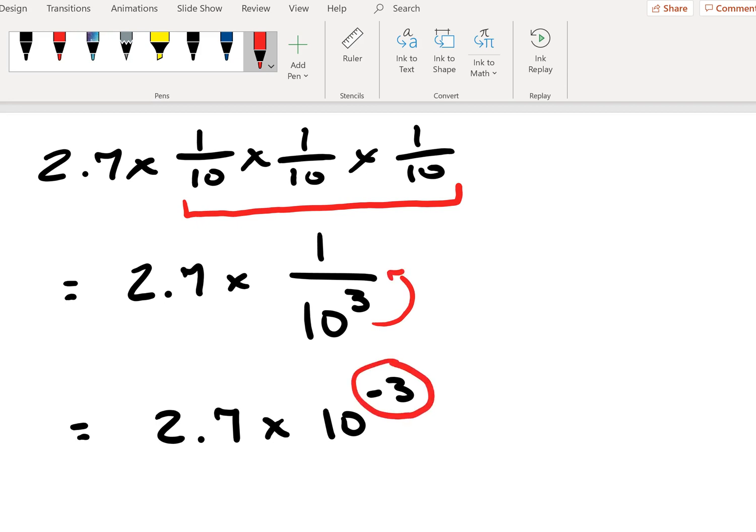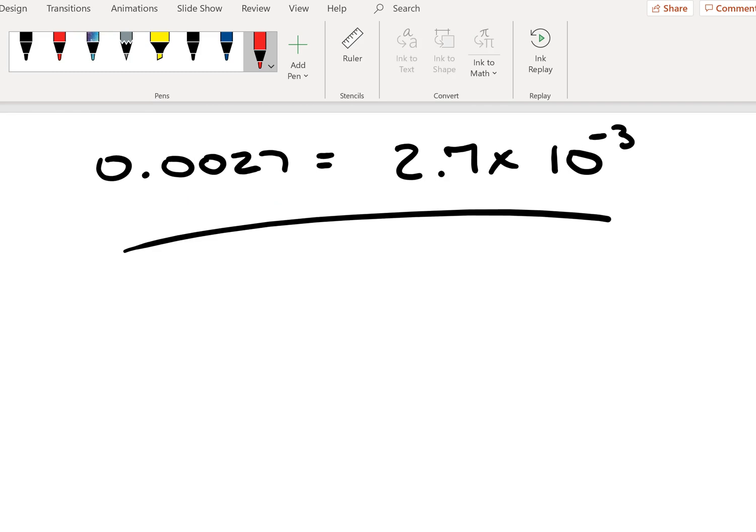And so indeed, we do see that our original expression whereby we said 0.0027 is equal to 2.7 times 10 to the minus third is correct.